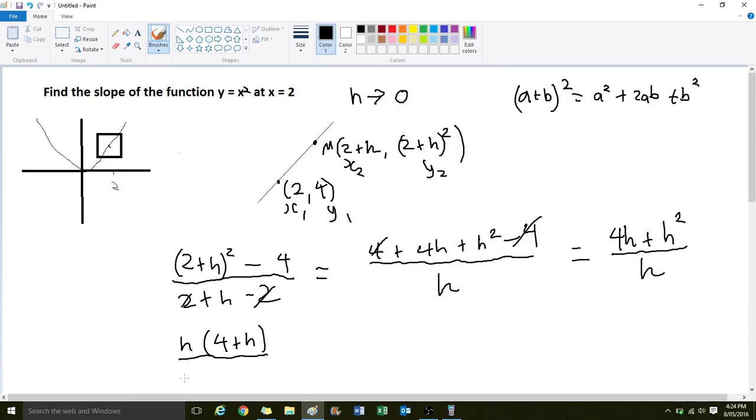Now because we have the same factor at the top and bottom, that can cancel. So the answer that we get is 4 plus h. But of course, as h approaches 0, h is pretty much 0, so the answer is going to be 4.